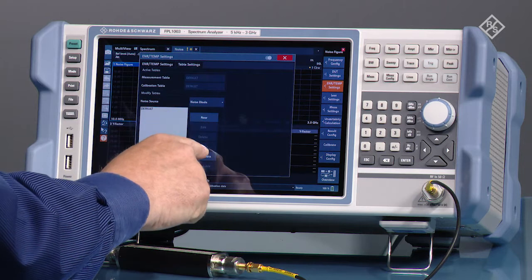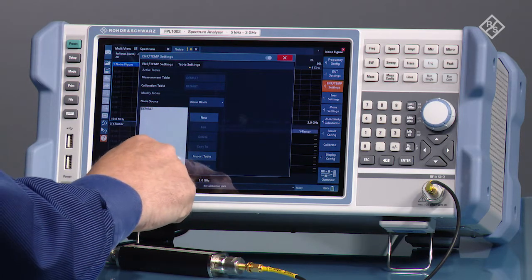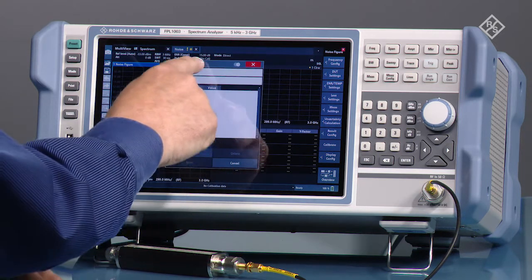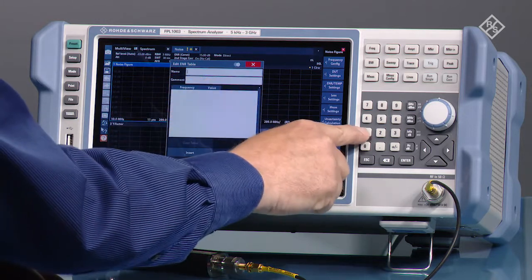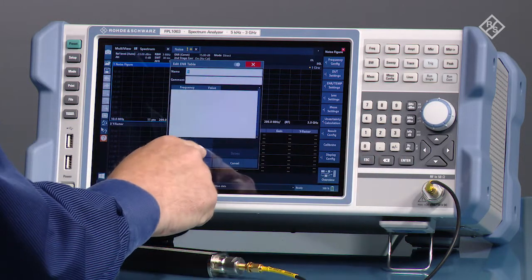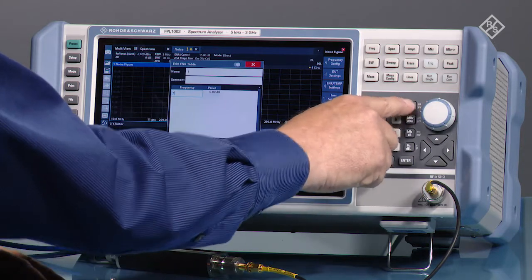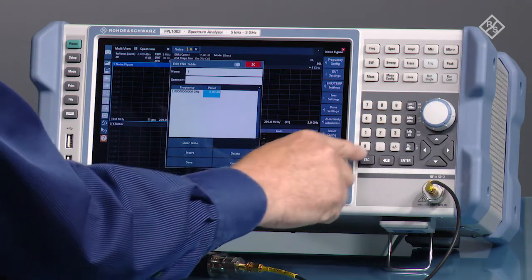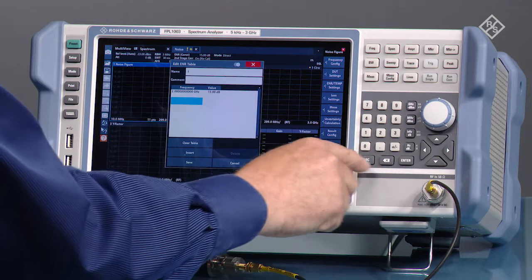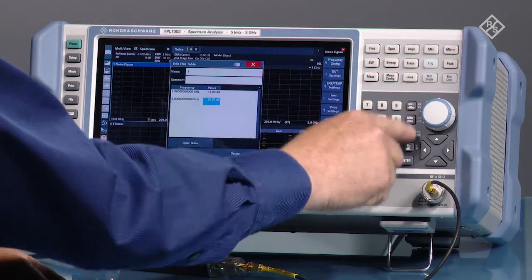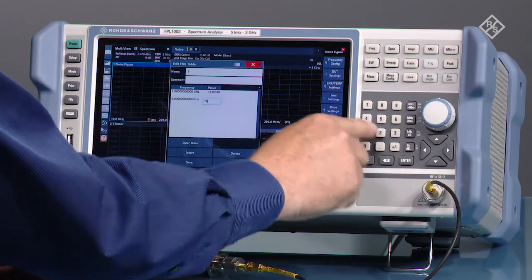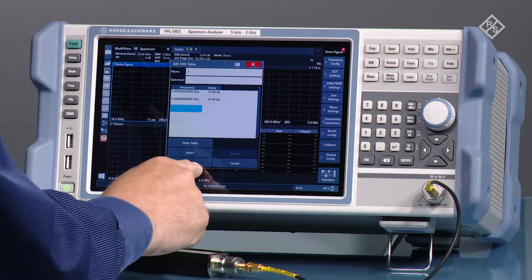We're going to go to table settings and new, give it a name, and then insert values. At 2 GHz we're going to enter a value of 13, at 3 GHz a value of 14, and now we're going to save that.